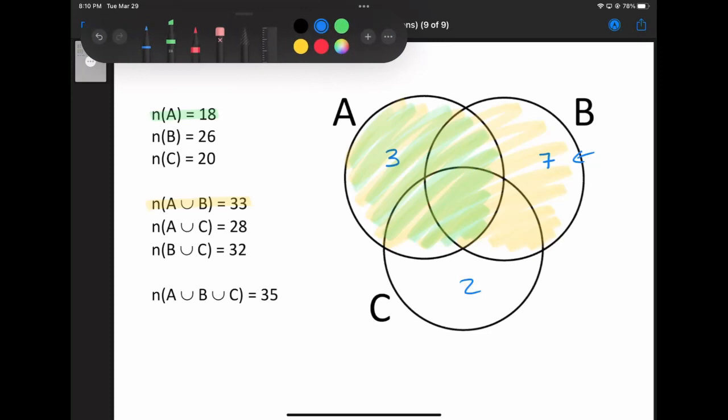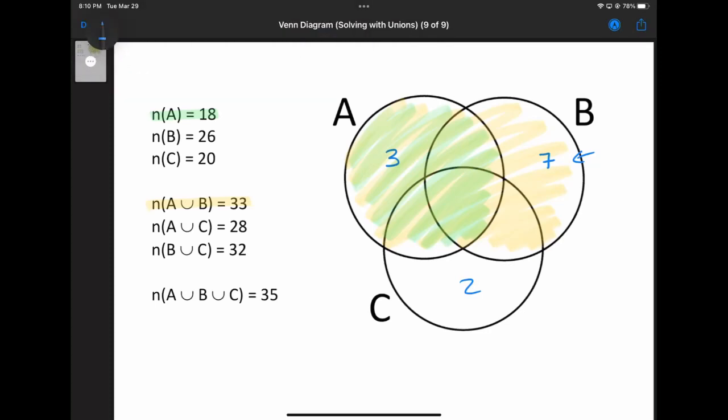However, 15 is both this area that had the seven in it, plus this area together. So if it's 15 for the both of them, this one must be eight. So the two of them total 15.